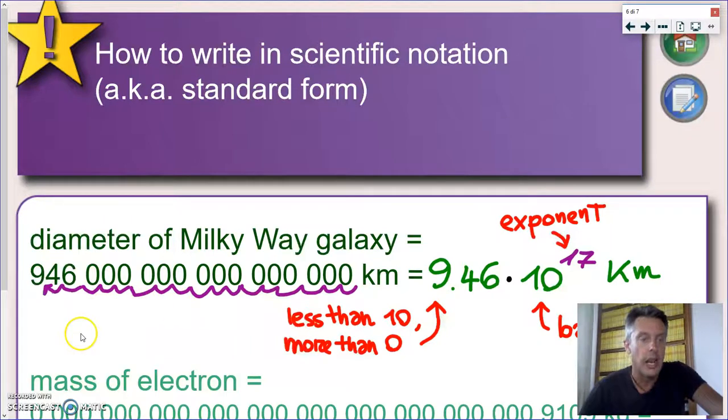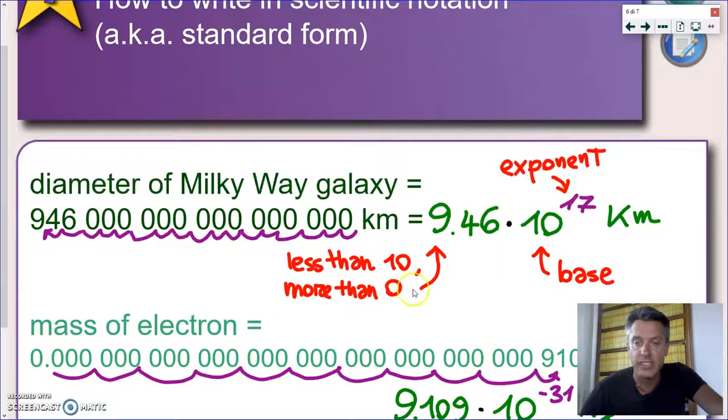You have to count how many times you move the decimal point. You moved it 15 points until here, then you have to move it 2 more times. So the correct power is 10 to the power of 17. And here you are, the diameter of the Milky Way galaxy, written beautifully in scientific notation.